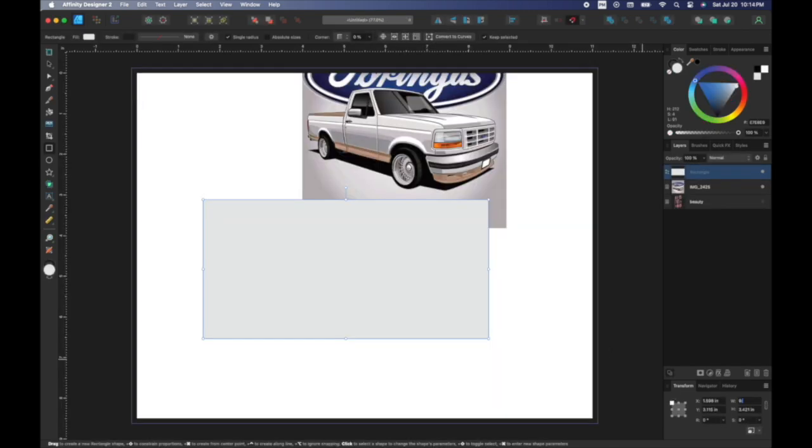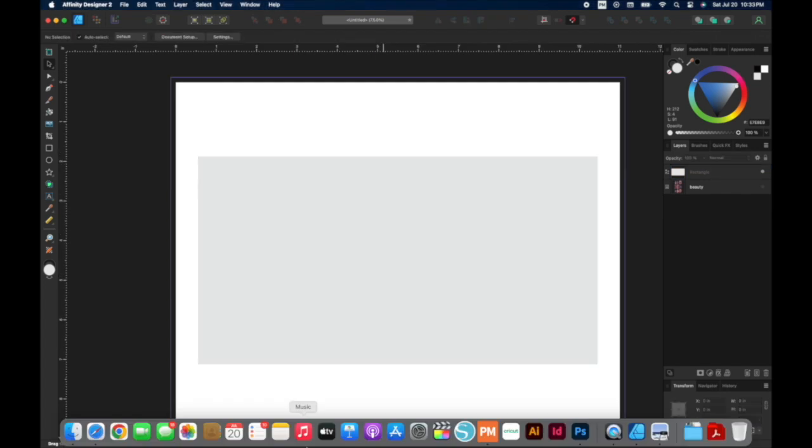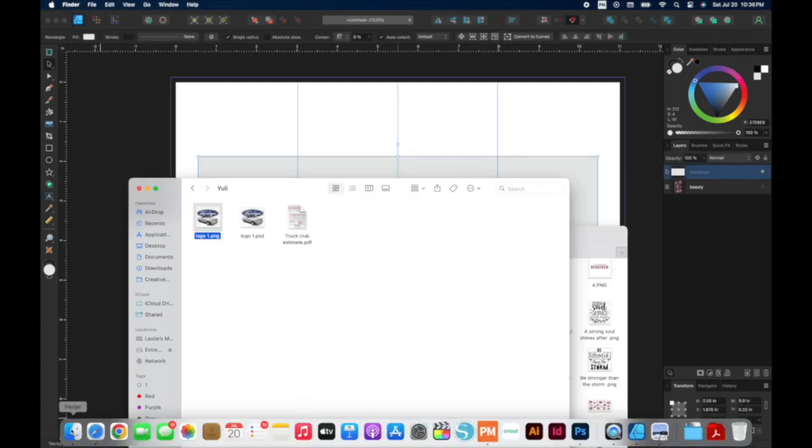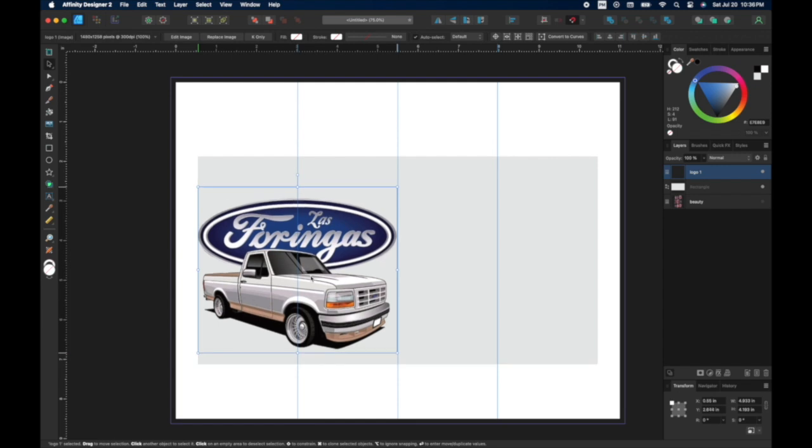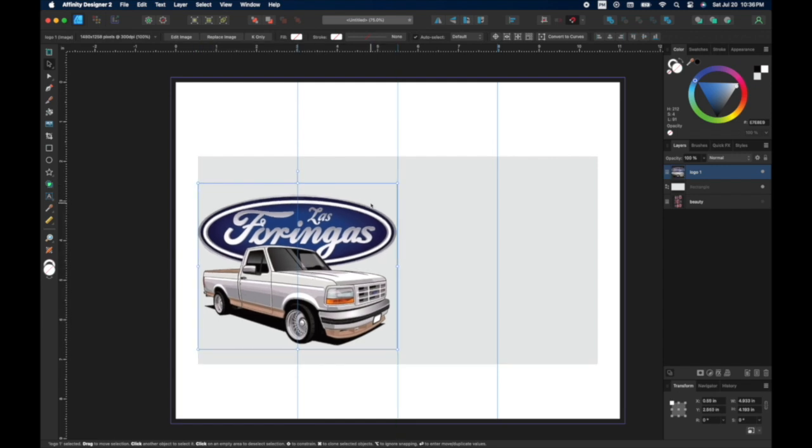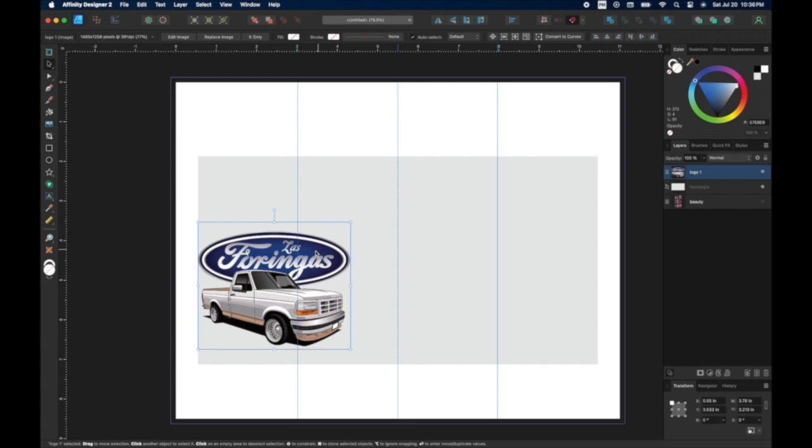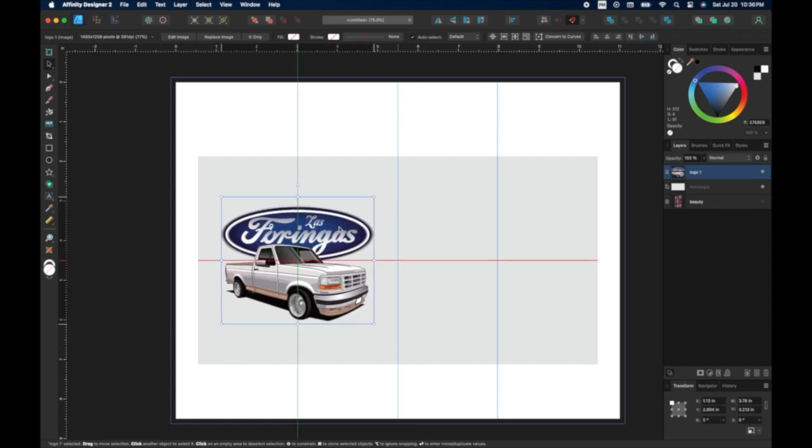I created a new document and sized a rectangle to 9.9 by 5.25, which is the size of my tumbler. Then I used guides to find the middle of each side and imported the logo and sized it down how I wanted it, making sure that the center was lined up with the center of the frosted tumbler.